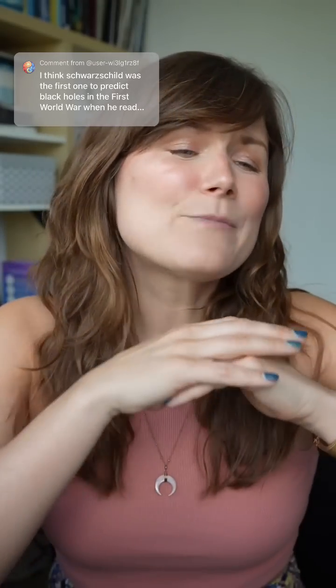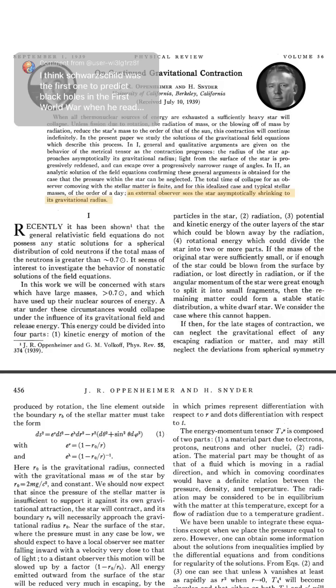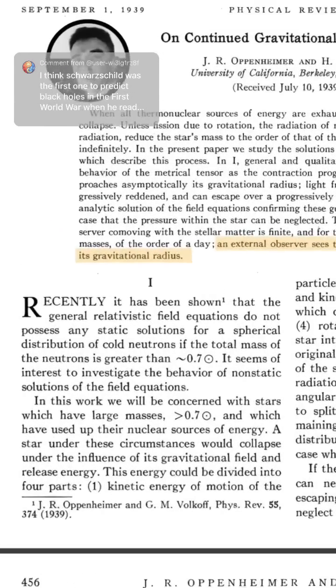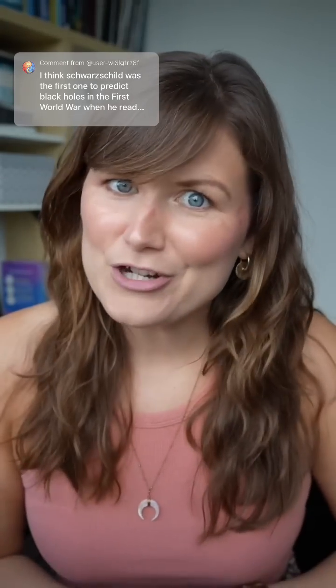Those singularities bothered people for decades, until Oppenheimer and Snyder were the first to show that when a star collapses under gravity it shrinks beyond the radius of one of those singularities, the gravitational radius — what today is called the Schwarzschild radius in honour of Schwarzschild, or the event horizon.